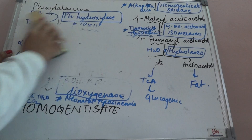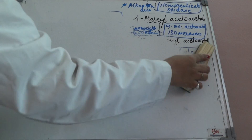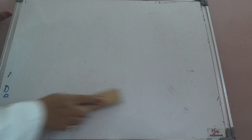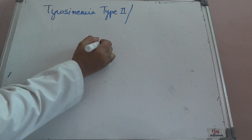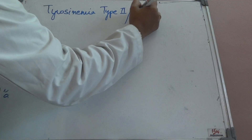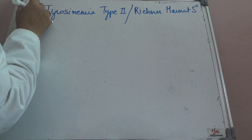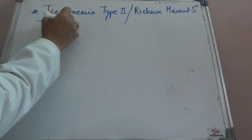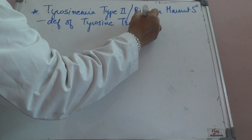Now coming to each deficiency disease one by one. Phenylketonuria we have already discussed, so first we come to tyrosinemia type 2. Tyrosinemia type 2 is also called Richner-Hanhart syndrome — this could be an MCQ. Richner-Hanhart syndrome is caused by deficiency of tyrosine transaminase.